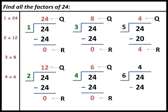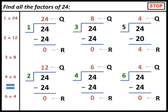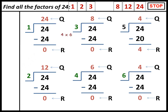Then divide 24 by 6 and get quotient 4 and remainder 0. Notice that if we divide 24 by 4 and 24 by 6, we get the same multiplication fact: 4 multiplied by 6 equals 24, and 6 multiplied by 4 equals 24. If we get the same multiplication fact, stop here. Therefore the factors of 24 are 1 and 24, 2 and 12, 3 and 8, and 4 and 6.